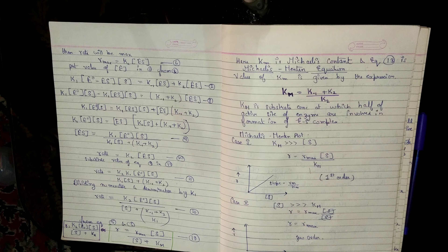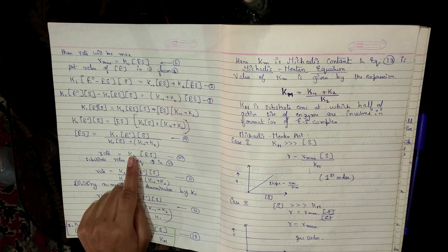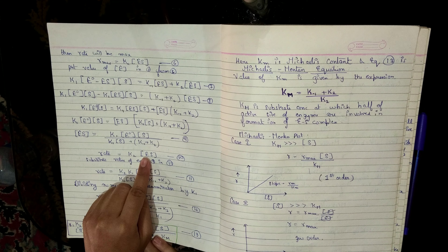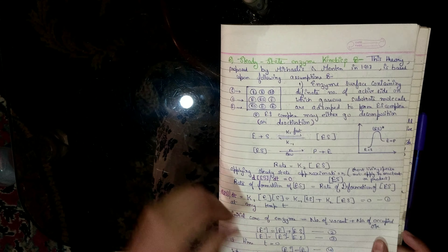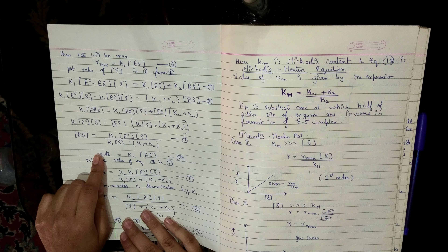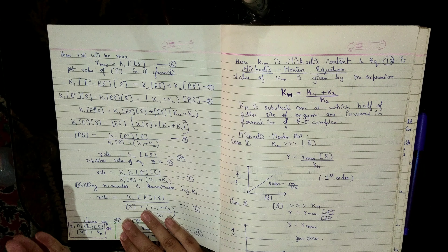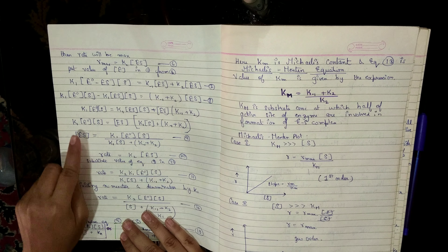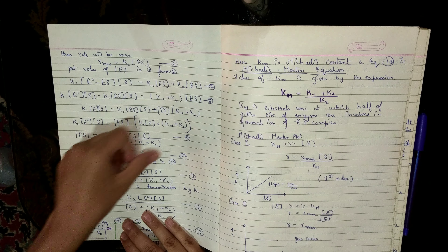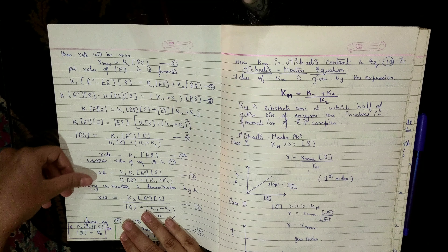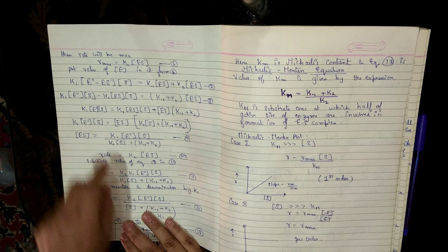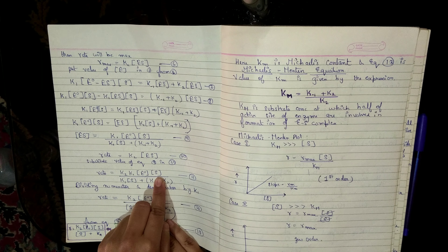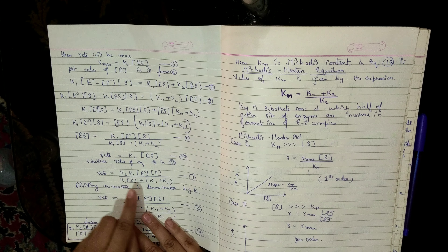Our rate determining step gives: rate r = k2 × [ES] (equation 10). We substitute [ES] from equation 9 into equation 10: r = k2 × k1·E₀·[S] / (k1·[S] + k-1 + k2). Now we divide every term in numerator and denominator by k1. The k1 terms cancel in the numerator giving k2·E₀·[S].